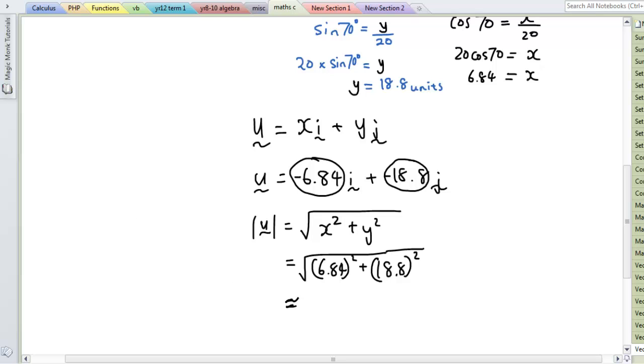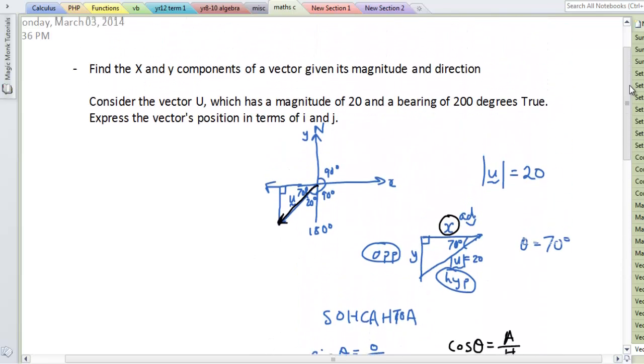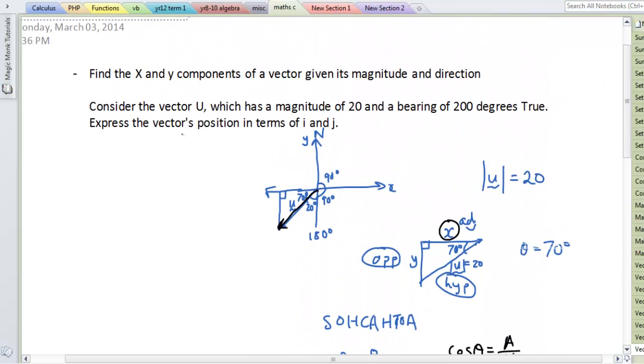Because we have rounded this. We have rounded these numbers here, which doesn't make the answer exact. But that's how you do it. So hopefully you guys understand how to find the position vector given a magnitude and the bearing of a vector.